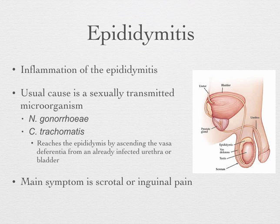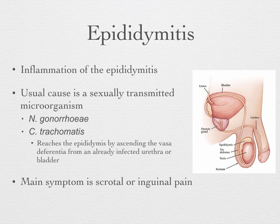Epididymitis is basically inflammation in the testicle area — the epididymis sits on the top portion of the testes. Patients present with a lot of scrotal pain and may have urinary symptoms. It's often related to a sexually transmitted organism, especially in the younger sexually active male — gonorrhea or chlamydia in particular. The infection reaches the epididymis through the ascending vas deferens and backtracks from the urinary tract. Treatment involves a urinary culture to identify the bacteria and then appropriate antibiotics.